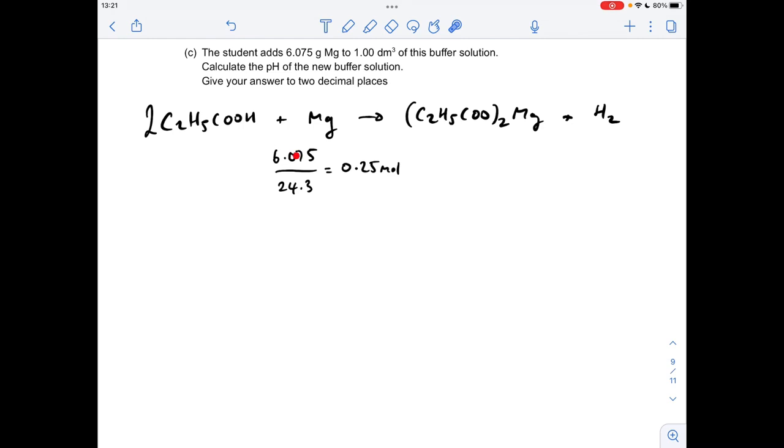So the first thing I've done is worked out the moles of magnesium, mass over MR, 0.25 moles. Then if we feed that into the buffer equilibrium, the mole ratio is telling us that if 0.25 moles of magnesium is reacting, 0.5 moles of acid is going to react because of the ratio.